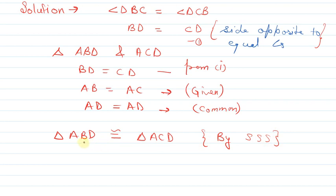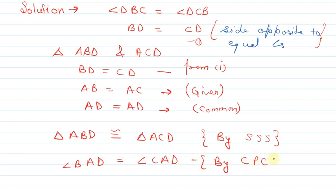So triangle ABD is congruent to triangle ACD. Now, angle BAD is equal to angle CAD — by CPCT, which means congruent parts of congruent triangles. If two triangles are congruent, then all their corresponding parts are equal.